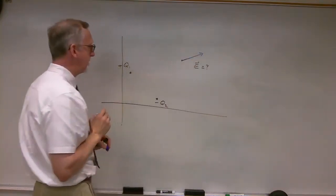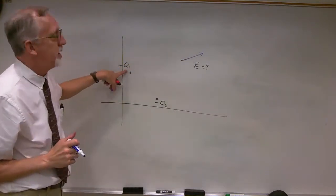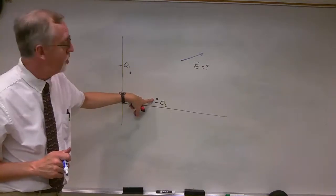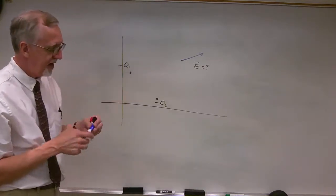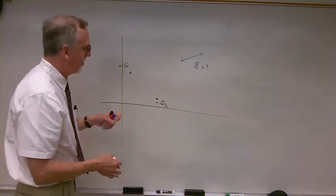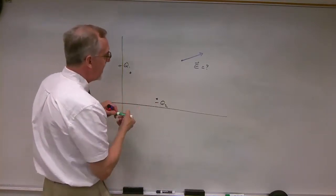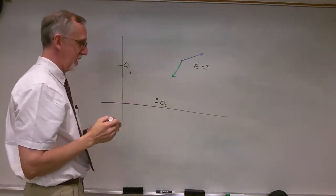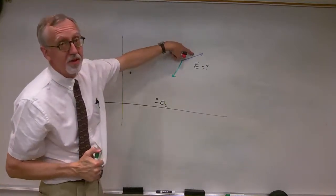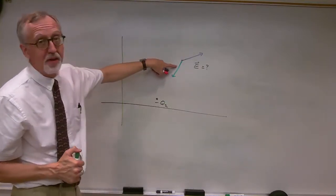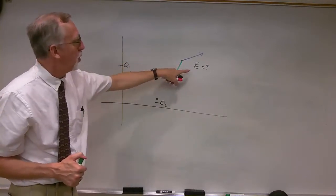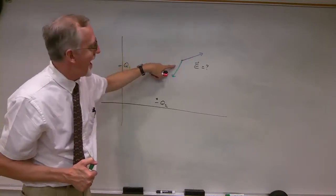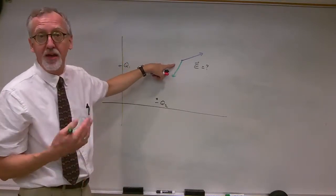We would end up with something like that — we might call that E1, the component of the electric field due to Q1. What's the electric field due to Q2? Well, Q2 is negative. We're going to end up with a component of the electric field pointing toward Q2, so we would end up with a part of the electric field pointing in that direction. This would be the part due to Q1, and this would be the part due to Q2. The total electric field would be the sum of these two components.